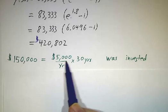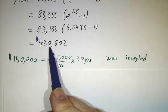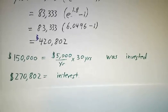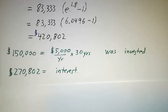But because of the interest, that $150,000 grew to be $420,000. So she actually earned $270,000 in interest. That's the power of compounding. Go start your retirement savings plan while you're still young.